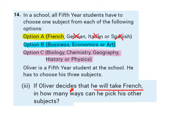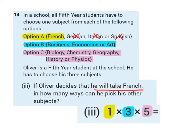Question 3: If Oliver decides that he will take French, in how many ways can he pick his other subjects? For option A, German, Italian, and Spanish are crossed out because he's definitely taking French, so he has one subject for option A. Option B still has three, and option C still has five. We see the phrase 'how many ways,' so we multiply: 1 multiplied by 3 multiplied by 5 gives us 15. There are 15 ways he can choose his subjects if he definitely takes French.